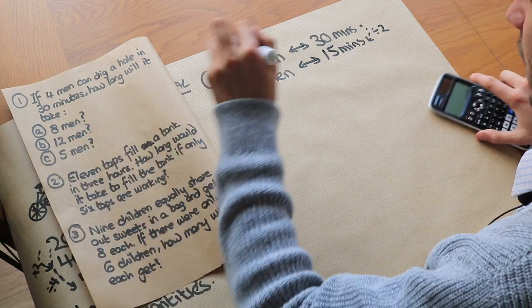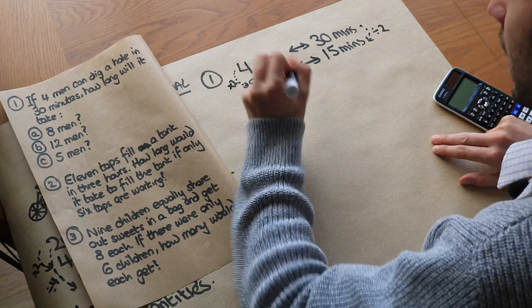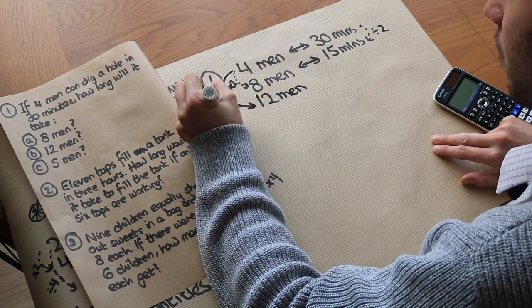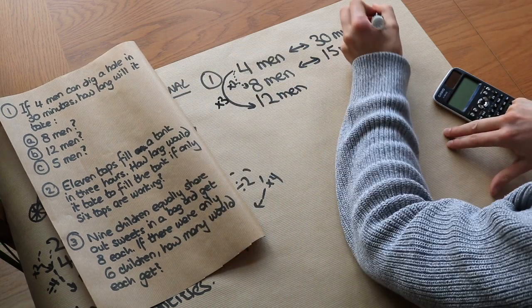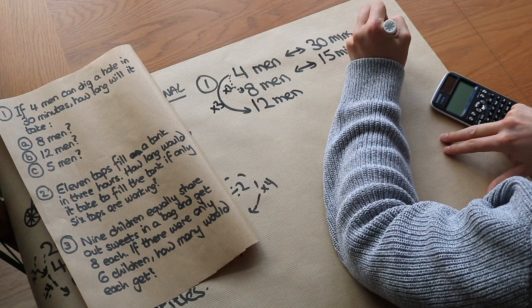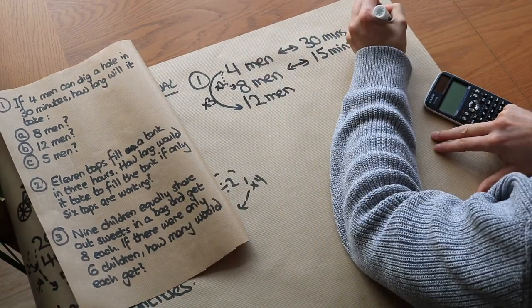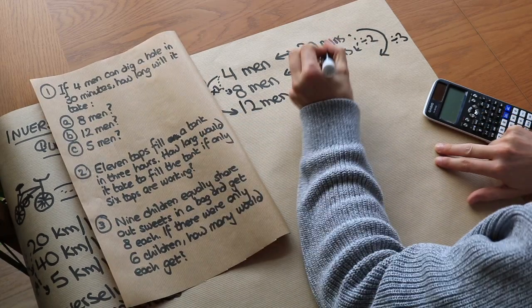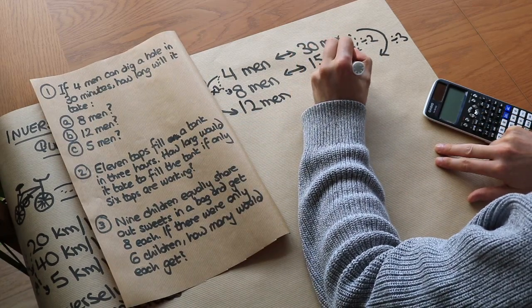What about for 12 men? We've got 12 men. Now thinking about the original value here of 4, we can see that's 3 times as much. And therefore, because they're inversely proportional, the number of men and the amount of time, we're going to divide the amount of time by 3. So 30 divided by 3 is 10 minutes. So it would take 10 minutes.